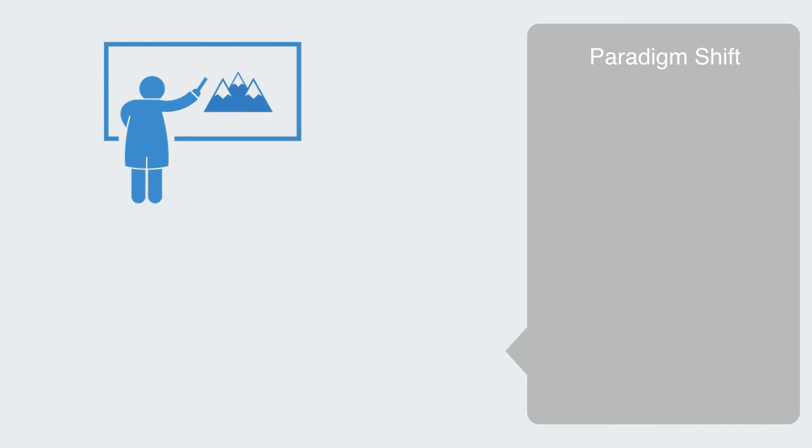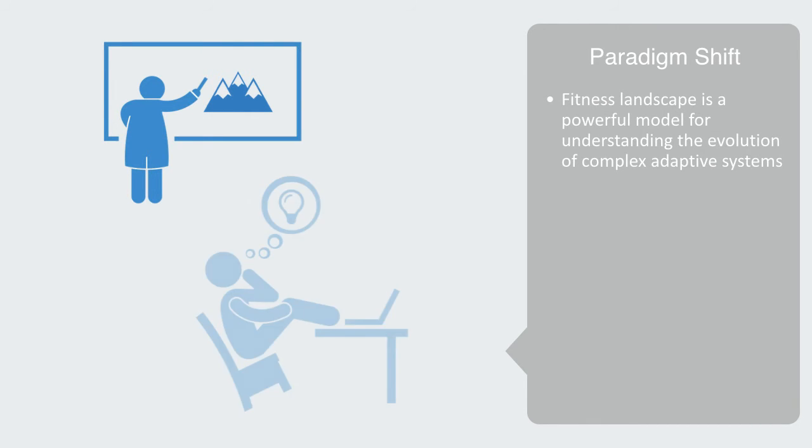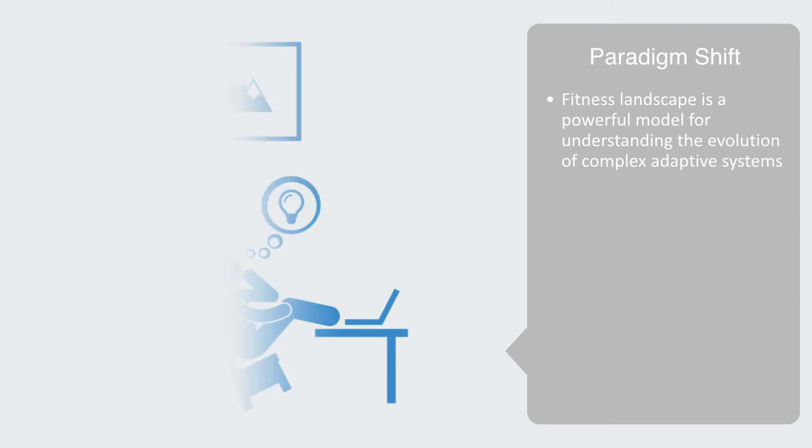The model of a fitness landscape is a powerful model for understanding the evolution of complex adaptive systems. But it gives us a somewhat narrow vision to the evolution of technology. Because new technologies and ideas can create whole new industries and landscapes. Technology is just one part in the broader technical framework of what is called STEM, which stands for Science, Technology, Engineering and Mathematics.